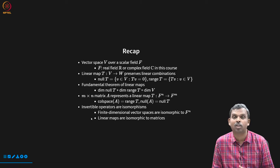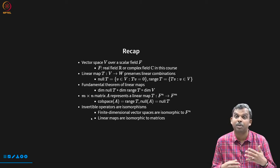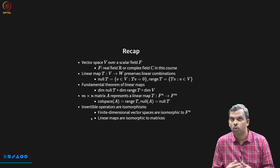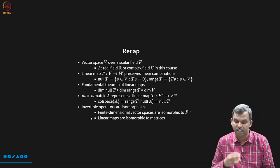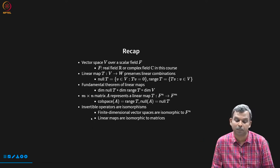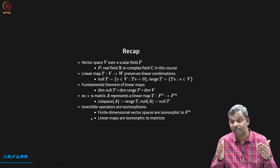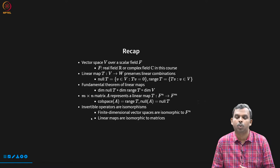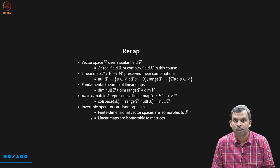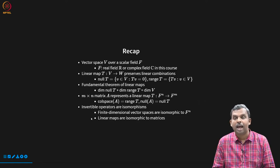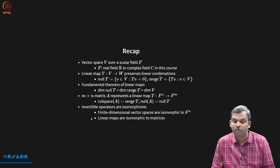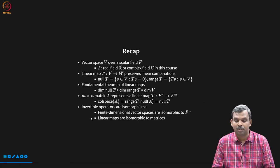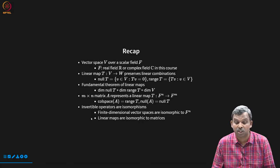There is this wonderful result called the fundamental theorem of linear maps, which relates the dimension of the null and the range to the dimension of the overall initial vector space. And then we saw this interesting correspondence between m×n matrices over the field F and a linear map from F^n to F^m. We also saw these isomorphisms, which made this connection much stronger.